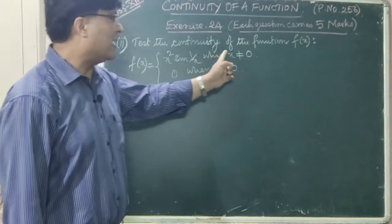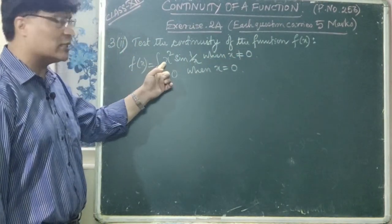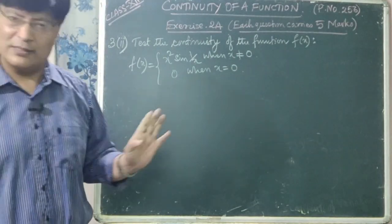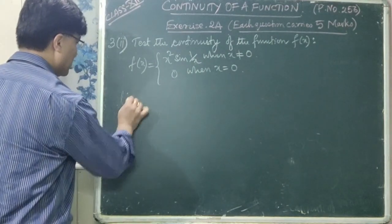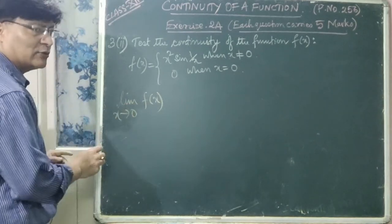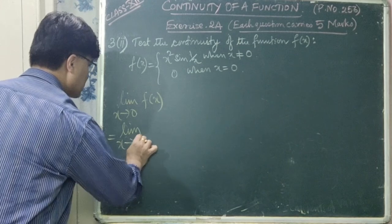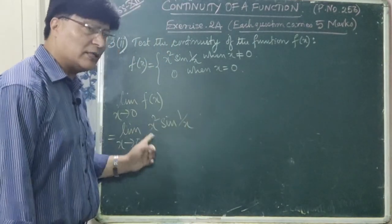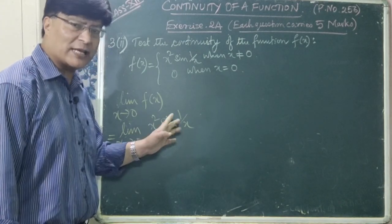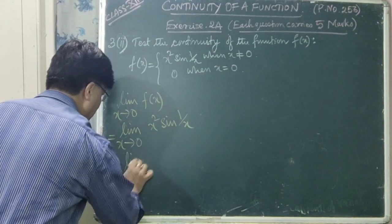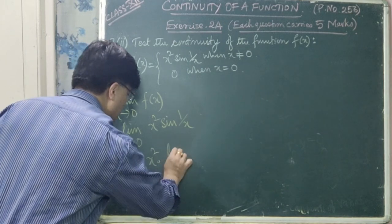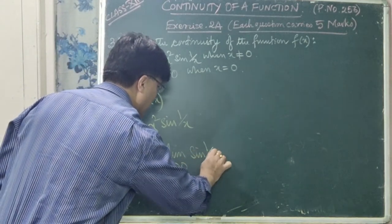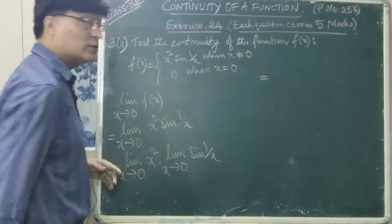Since for x greater than 0 and x less than 0 we use the same function f(x) = x²·sin(1/x), there is no need to get the separate right hand limit and left hand limit. Just find out limit x→0 f(x), which equals limit x→0 [x²·sin(1/x)]. We can separate this as: limit x→0 (x²) multiplied by limit x→0 (sin(1/x)).